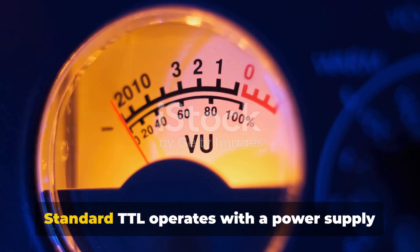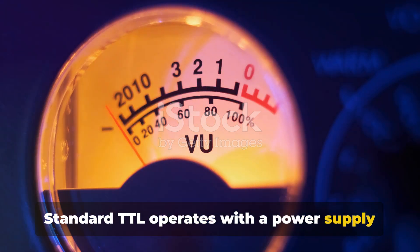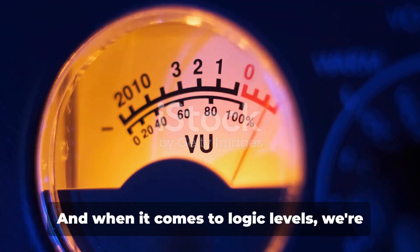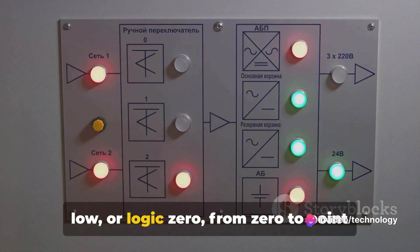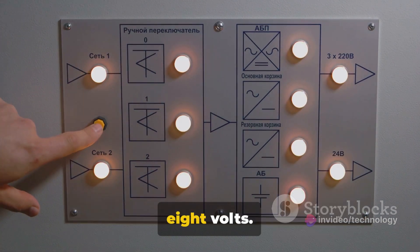Next up, we have voltage levels. Standard TTL operates with a power supply voltage of 5 volts. And when it comes to logic levels, we're typically looking at high, or logic 1, in the range of 2 to 5 volts and low, or logic 0, from 0 to 0.8 volts.